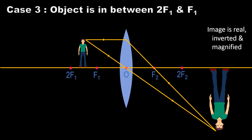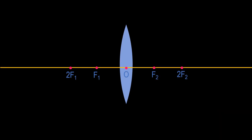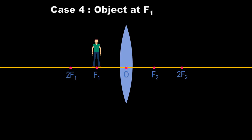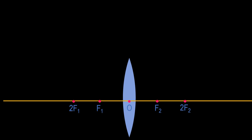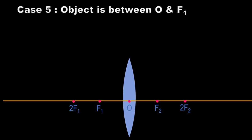Case 4: when the object is at F1. Consider the same two rays. Observe that the refracted rays are parallel to each other, so they never intersect. Hence there is no formation of an image.